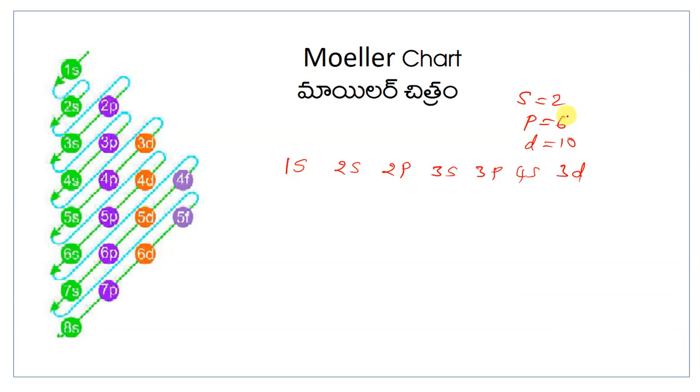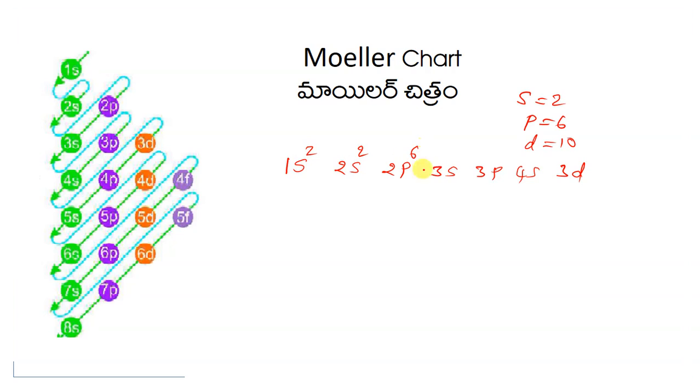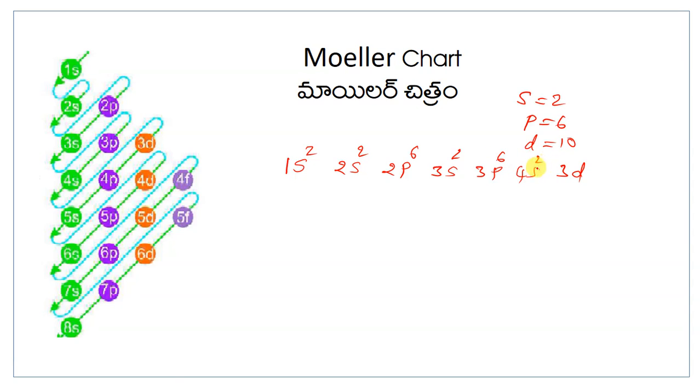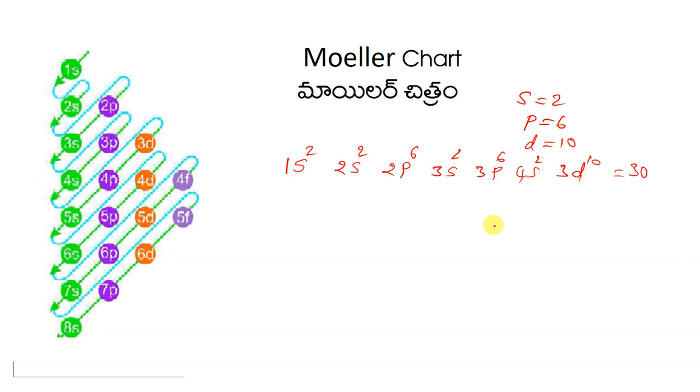S orbital can hold maximum 2 electrons, p orbital maximum 6, and d orbital maximum 10. S orbital: 2. P orbital: up to 6 maximum. D orbital: maximum 10. 1, 2, 3, 4, 5, 6, 7, 8, 9, 10. Now count: 2 plus 2 is 4, 6 is 10, 12, 18, 20, 10 total. This is the thirtieth element configuration.